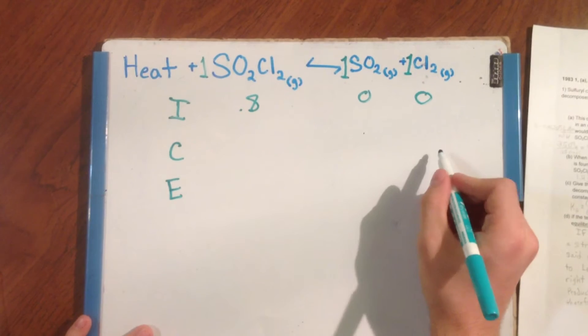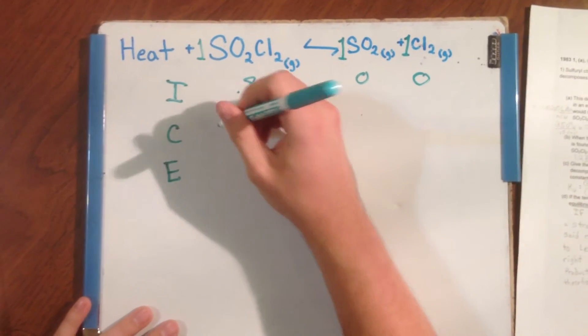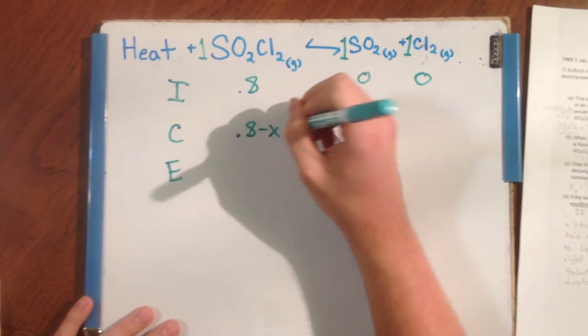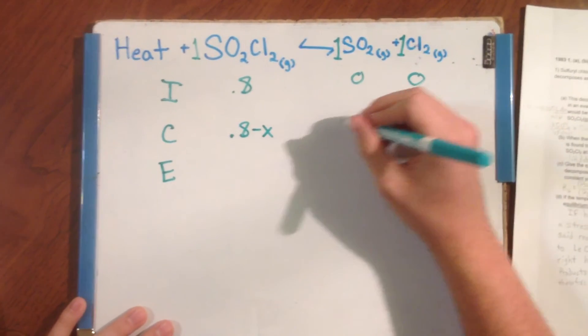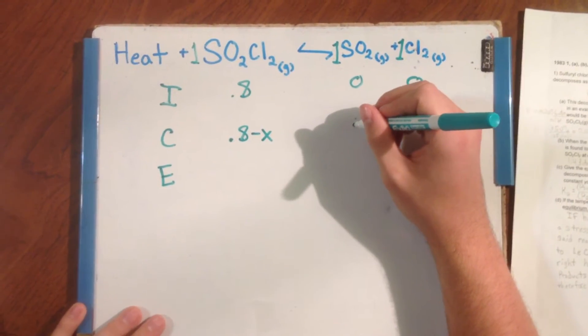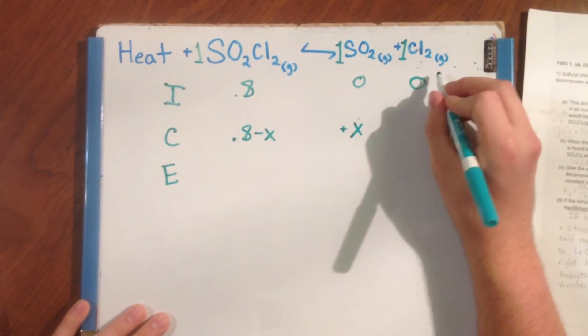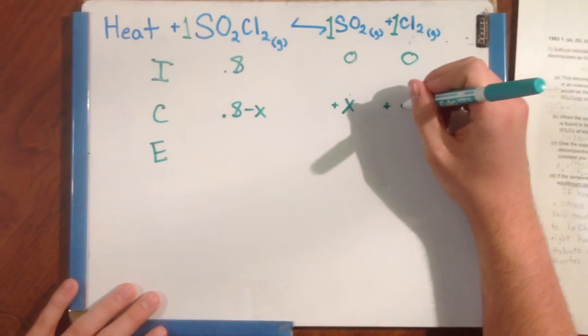And so, to fill out the middle row, we write 0.8 minus X. And then under the SO2 gas column, we write plus X. And under Cl2, we write plus X.